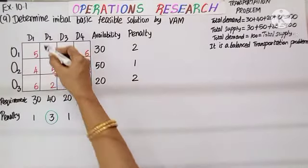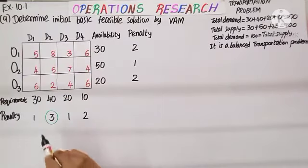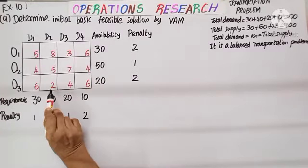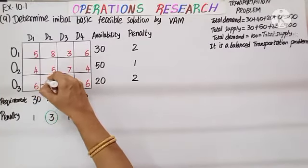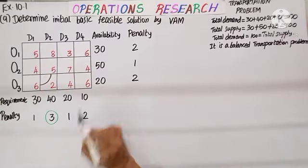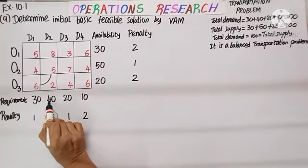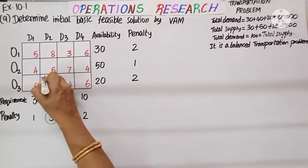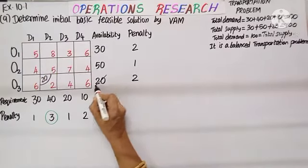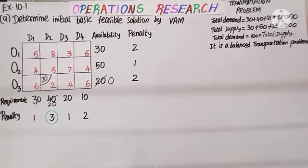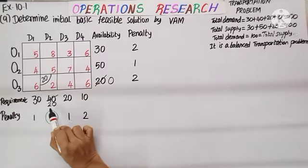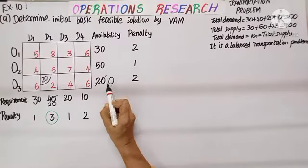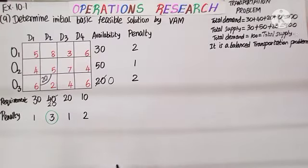We select D2 column with the highest penalty of 3. The least cost in D2 is 2. Supply is 20 and demand is 40 — the minimum is 20, so we allocate 20 here. This supply becomes 0 and demand becomes 40 minus 20, which is 20. Supply for O3 is now 0, so we eliminate O3.